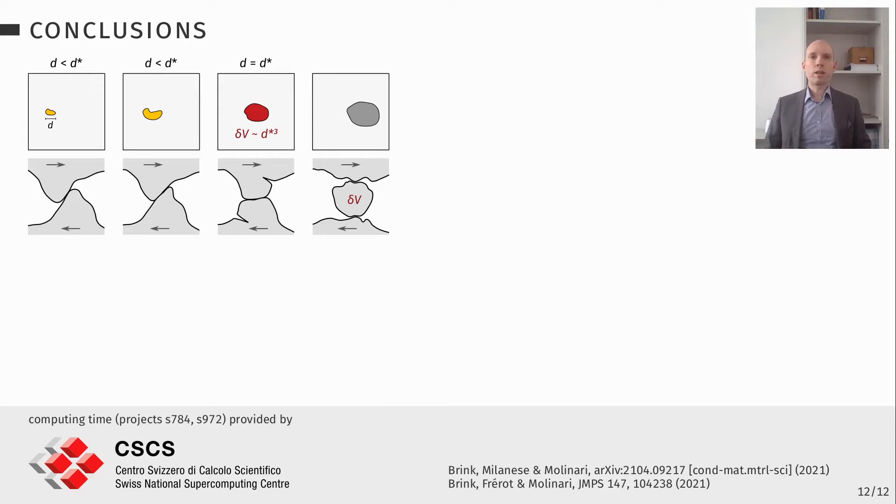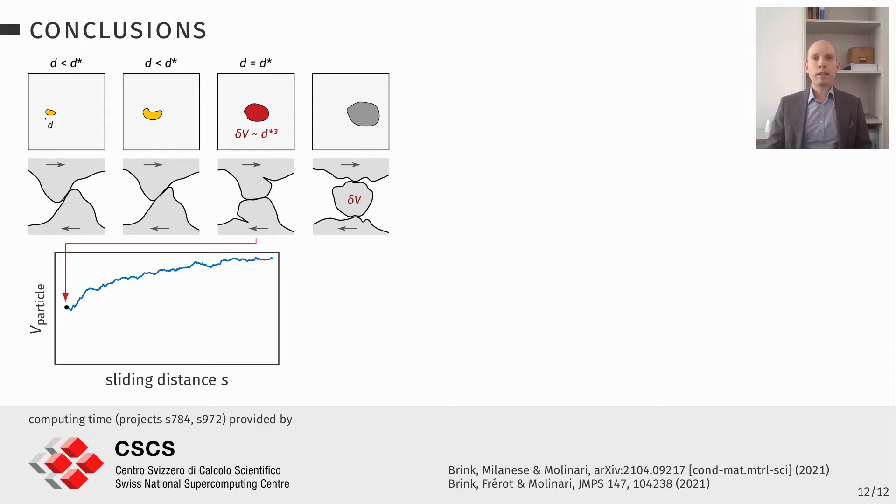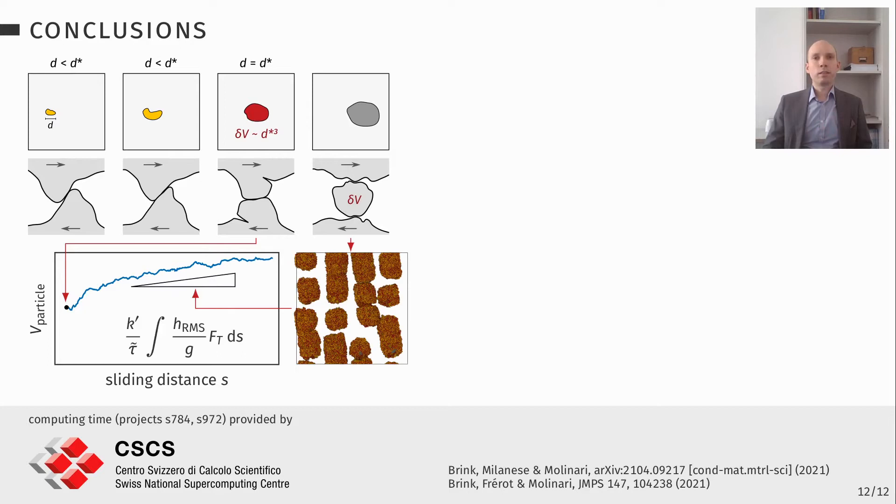So to summarize what I told you today, when two asperities come into contact, they form a contact junction with a certain size. This size can, for example, grow during sliding. When it grows big enough to reach a critical size, a wear particle is formed. A wear particle has a certain volume related also to this contact size. And when the wear particle keeps rolling, it can grow. And it can grow with a certain efficiency. This efficiency is related to the roughness of the surfaces on which it is rolling.